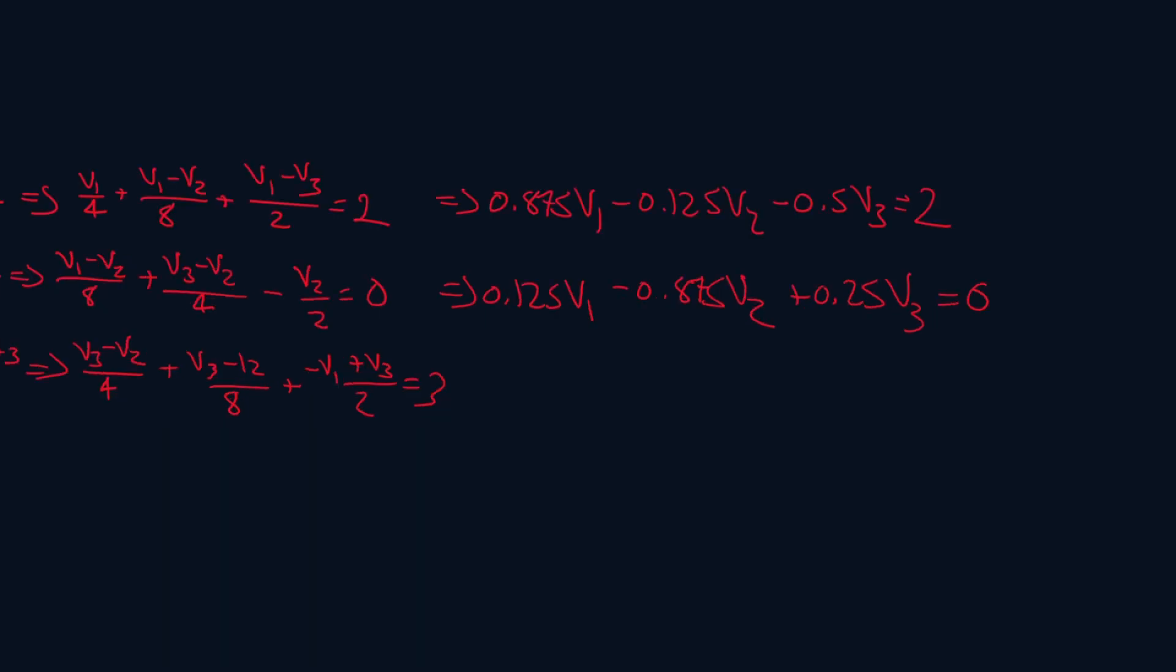For the last one, it's V1 over 2, so this is minus 0.5 V1. Then we have V2 over 4, so minus 0.25 V2. Then we have V3 over 4 plus V3 over 8 plus V3 over 2, which gives me 0.875 V3. The last one we have is minus 12 over 8, so that's minus 1.5, and this will be equal to 3. Let's bring that to the other side, and this will be equal to 4.5.